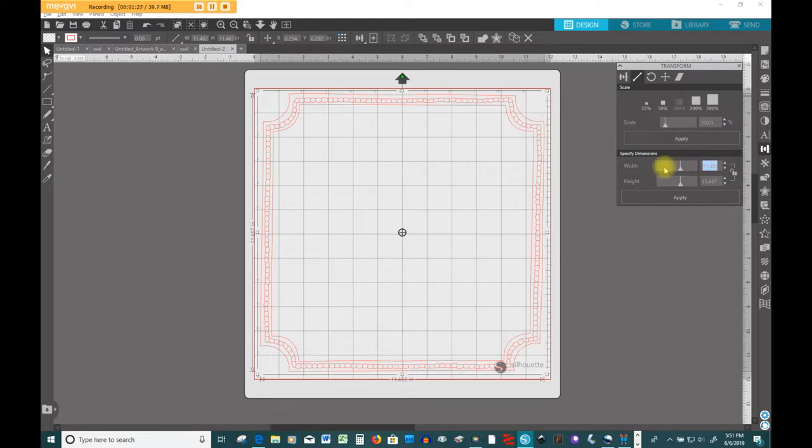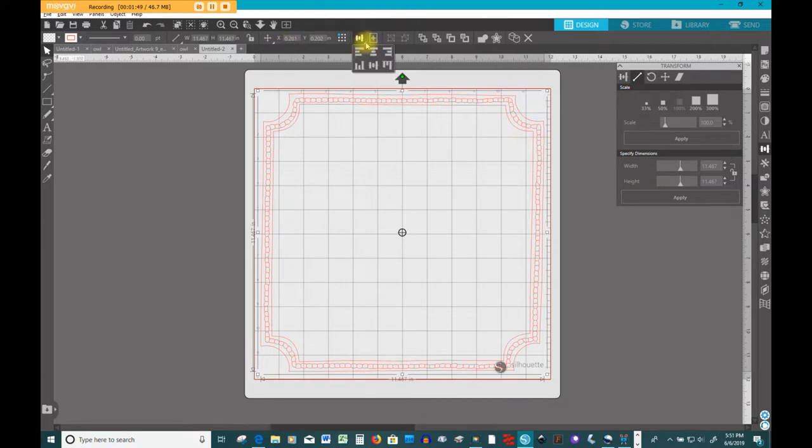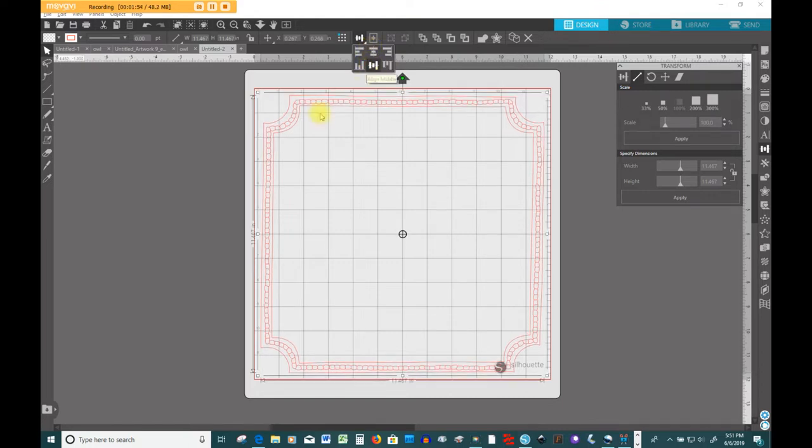Eleven point seven five, I think, fits pretty well. If you do it eleven point seven five by eleven point seven five, then hit apply, and it'll get it to the perfect size. Then you can go into the align function, align it horizontally, align it vertically, and that's exactly the way it's going to appear on your page.